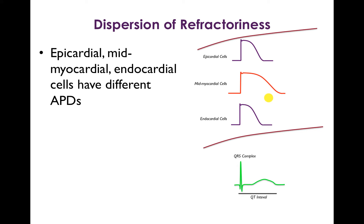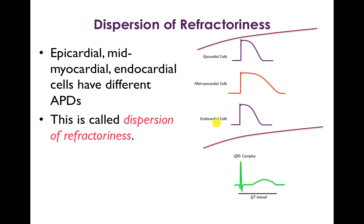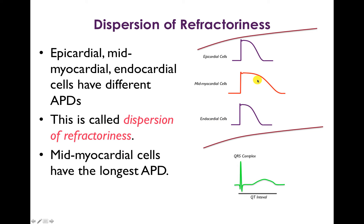First let's talk about dispersion of refractoriness. The key concept here is that epicardial, midmyocardial, and endocardial cells have different action potential durations. This concept is called dispersion of refractoriness. It's important to note that the midmyocardial cells are the ones with the longest action potential duration, shown here in red. And this is a normal property.